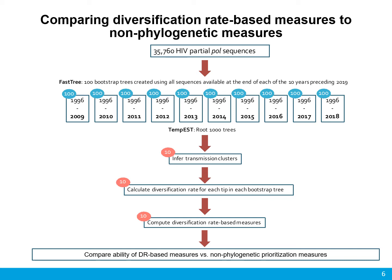In order to assess the efficacy of this measure and its ability to distinguish priority clusters, we compared it to several non-phylogenetic measures that are commonly used to determine priority clusters. We used a dataset containing 35,760 partial-pol HIV sequences from nearly 10,000 patients spanning the years 1995 to 2018. We inferred phylogenetic trees for each of these 10 years using 100 bootstraps for each. These trees were used to infer transmission clusters and calculate lineage-level diversification rates for each year, with values pooled across bootstraps to calculate diversification rate-based measures.